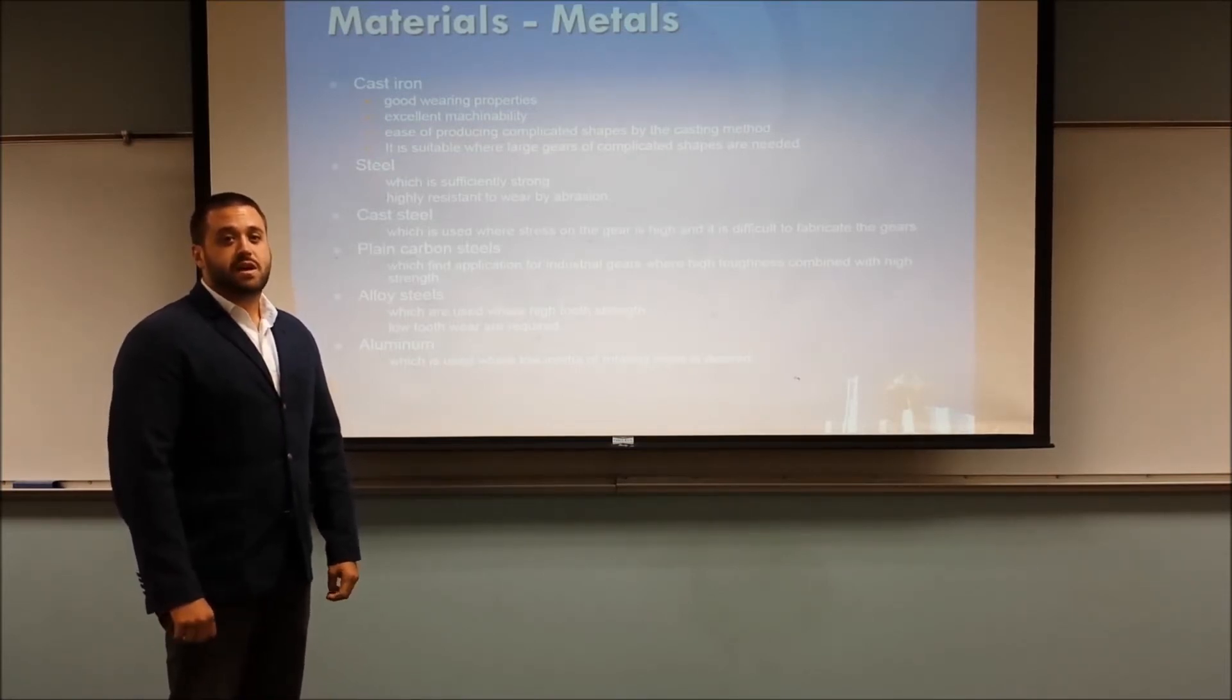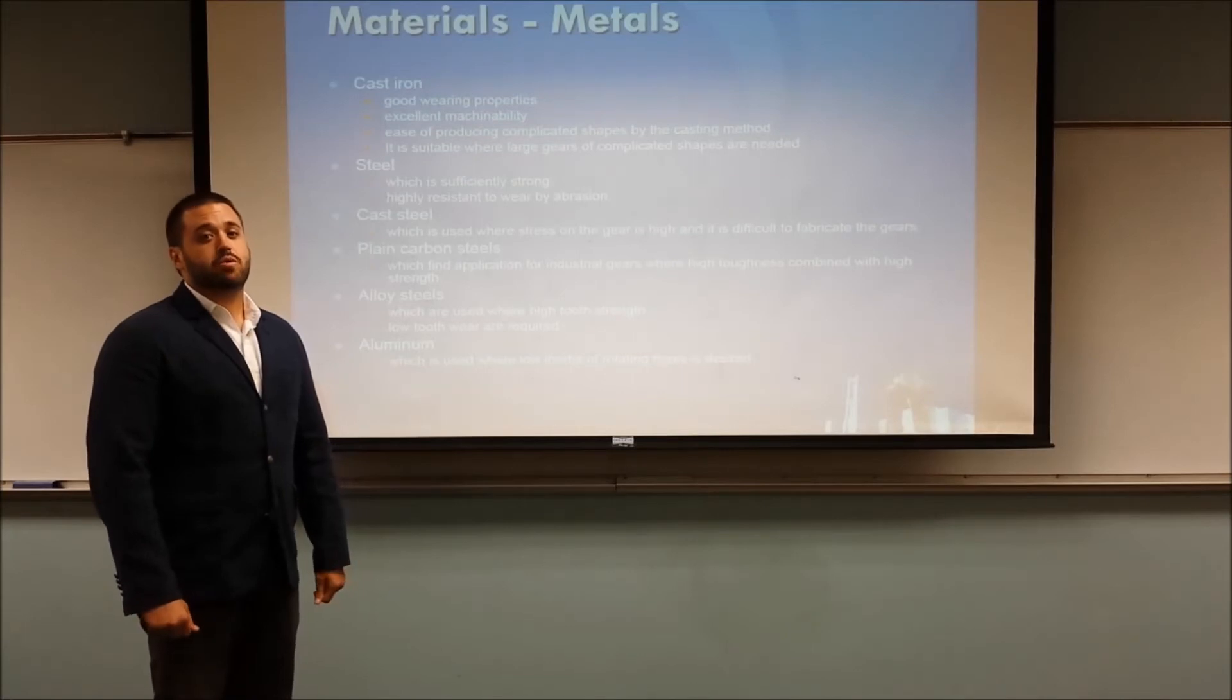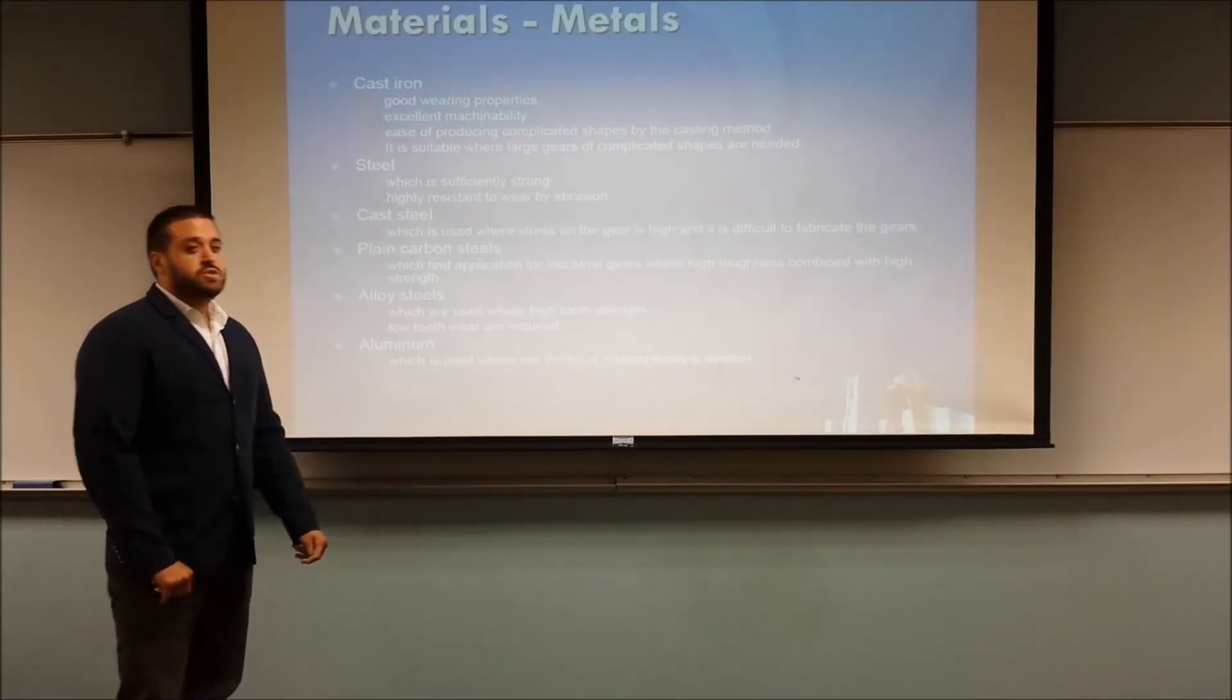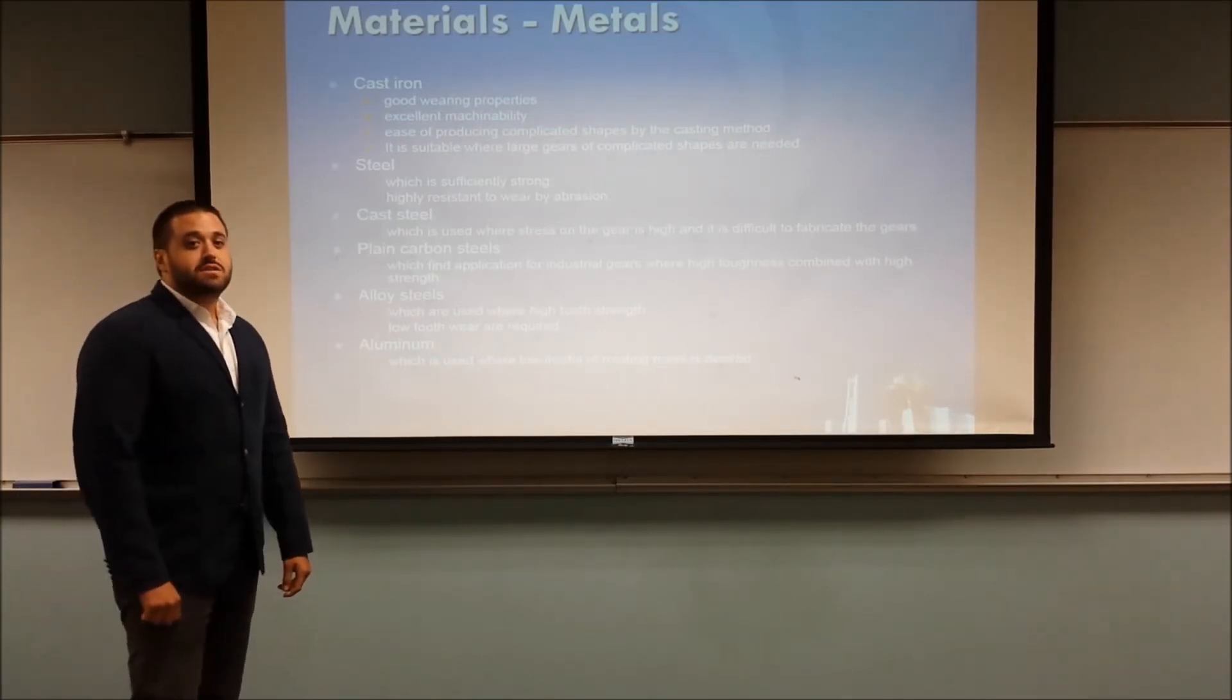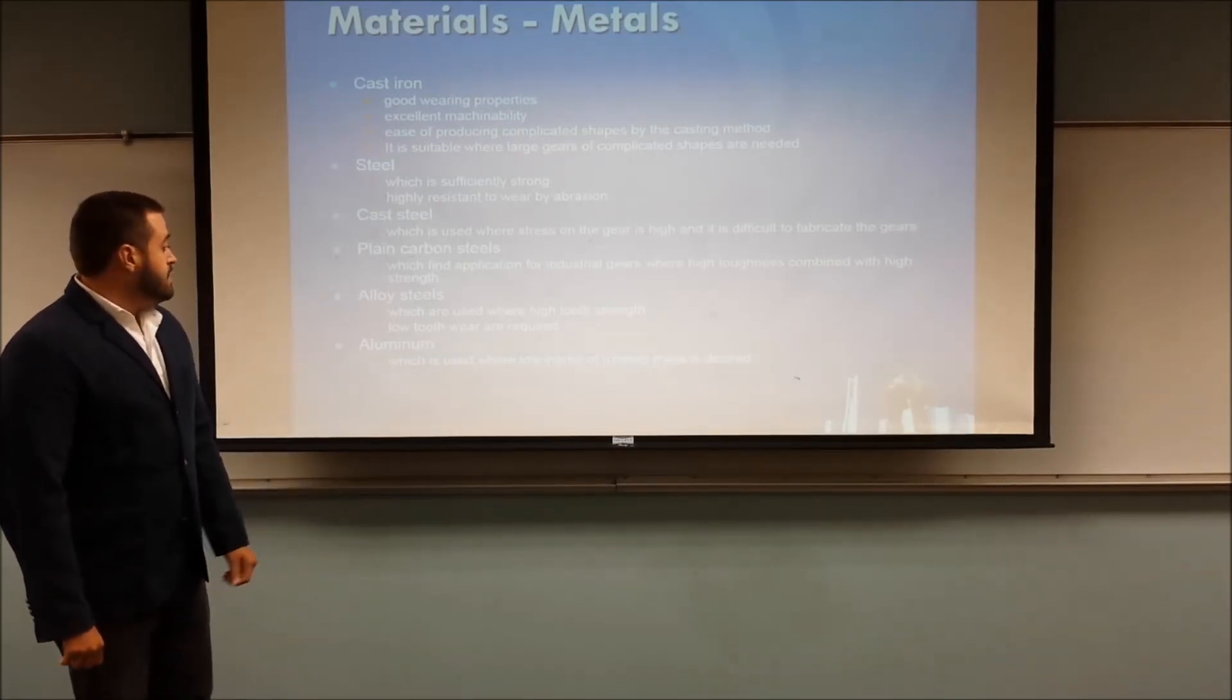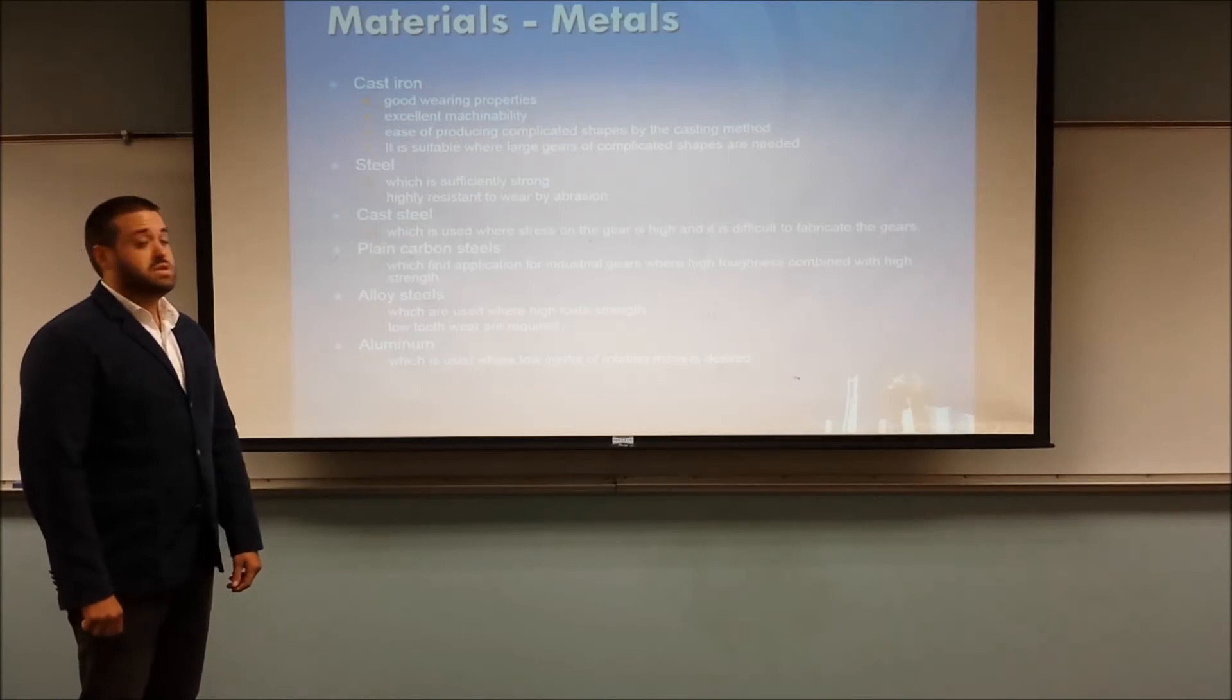After that we have cast steel, which is similar to regular steel, except that it's even easier to fabricate more complicated gears. Then we've got plain carbon steel, which is useful in industrial gears where you've got high toughness combined with high strength requirements. Alloy steels come after that, where high tooth strength is required along with low tooth wear. And finally we've got aluminum, which is used in lightweight gears like airplanes, for weight consideration and where low inertia is required.